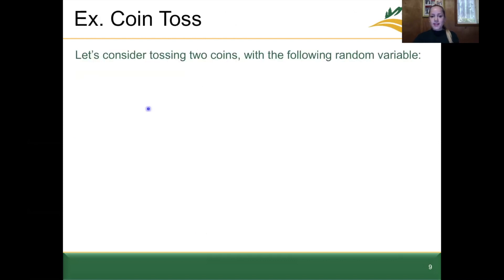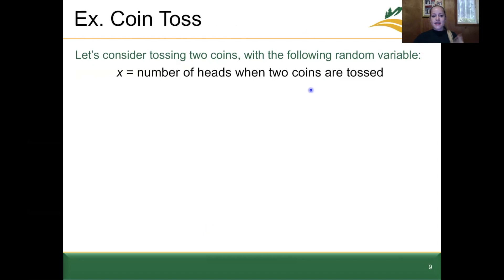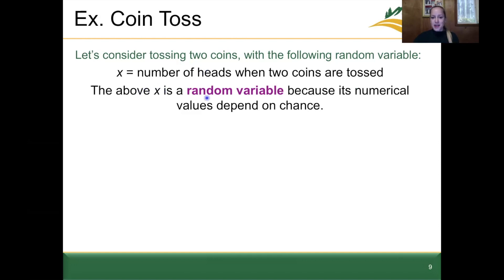Let's look at an example. Consider tossing two coins where x is the number of heads when two coins are tossed. This x is a random variable because its numerical values depend on chance — we toss a coin and by chance we get heads or tails. The variable is numerical because we're looking at the number of heads, not the act of tossing or getting heads or tails. The variable itself is the number of heads.